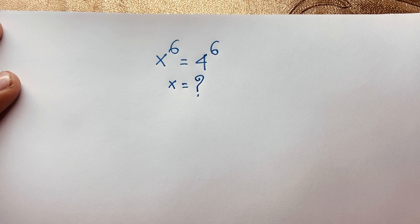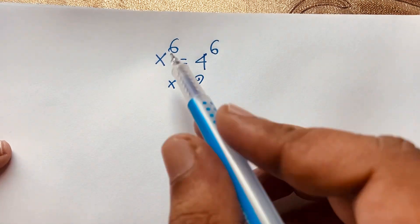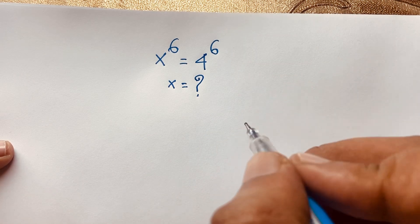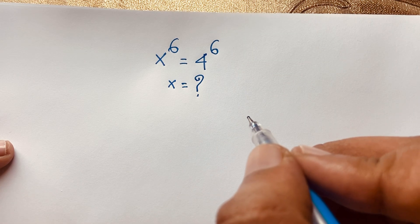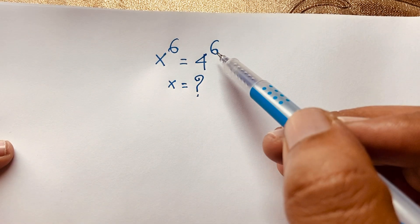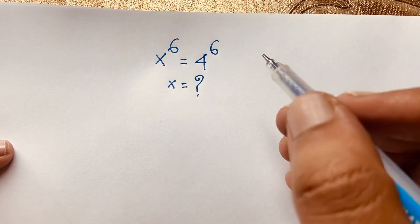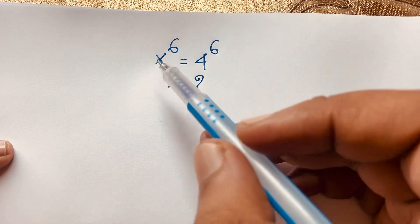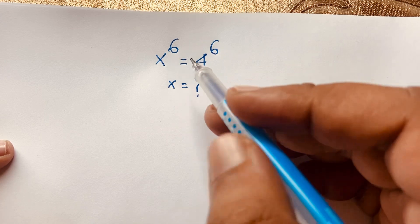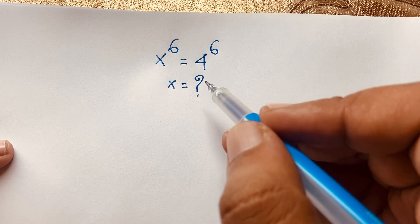Hello everyone. In this video we have solved a nice exponential math problem: x to the power six is equal to four to the power six. How to solve this maths olympiad question? Here the exponent is the same, so x is equal to four — this is one answer. But since x is to the power six, we know there are six roots as the full answer.